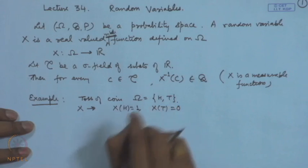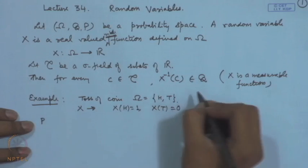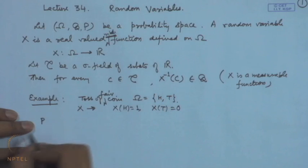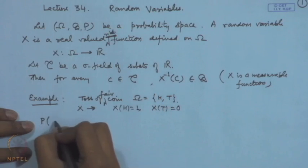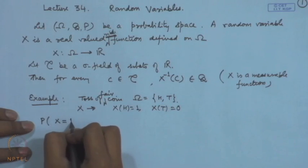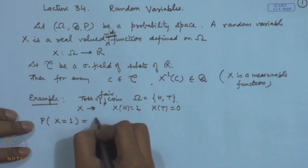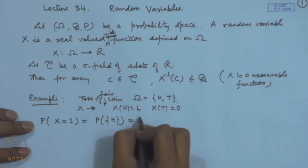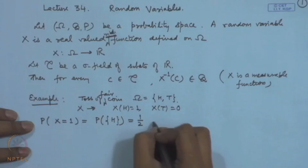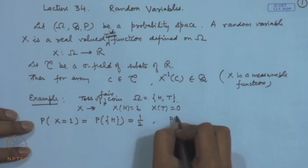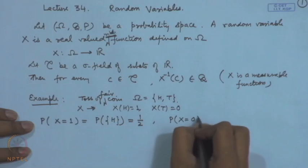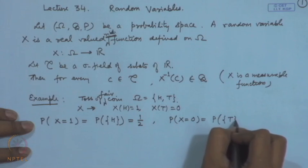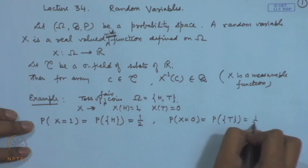Correspondingly, we can define the probabilities. Suppose the coin is fair. What is the probability that X = 1? This is nothing but the probability of occurrence of head, so that becomes 1/2. Similarly, the probability that X = 0 is the probability that a tail has occurred, which is also 1/2.